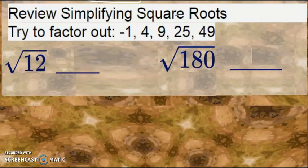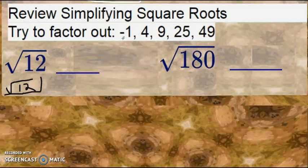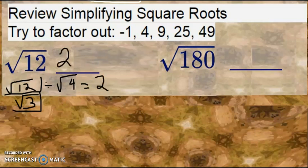Let's review simplifying radicals, specifically square roots. We're trying to factor out negative 1, 4, 9, 25, and 49. Square root of 12: there's no negatives, but we can divide by 4. 12 divided by 4 is 3. There's nothing else we can take out. The square root of 4 is 2, so our answer is 2 times the square root of 3. The outside numbers will be on the side, and the numbers left over are the last layer of this cake.